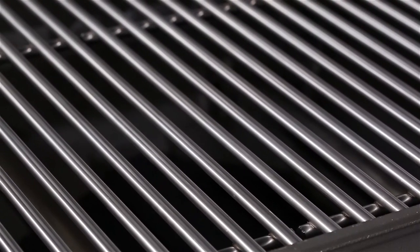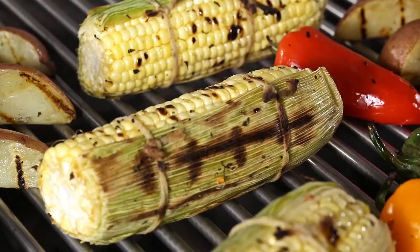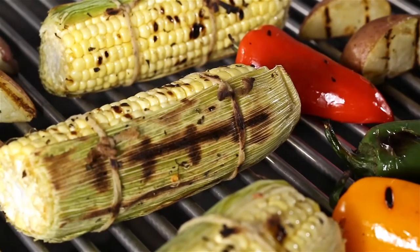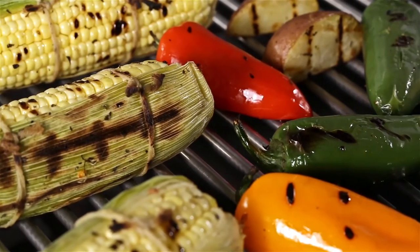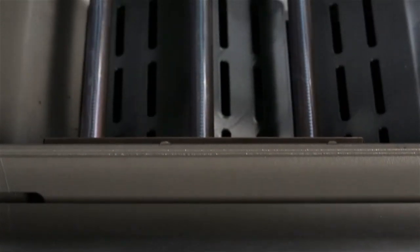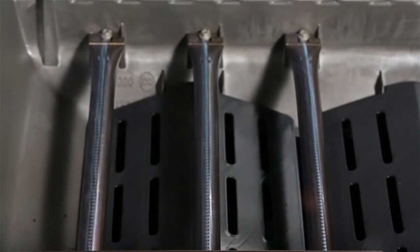Inside the Genesis gas barbecue, you will find heavy 7mm stainless steel rod cooking grates, which are built to retain heat and create perfect sear marks. For just the right high heat you want, when you want it,